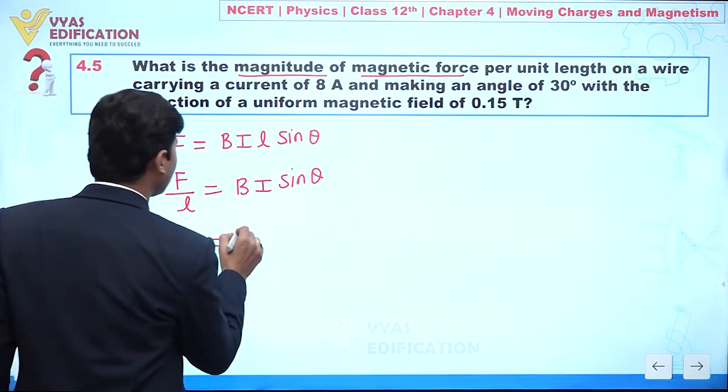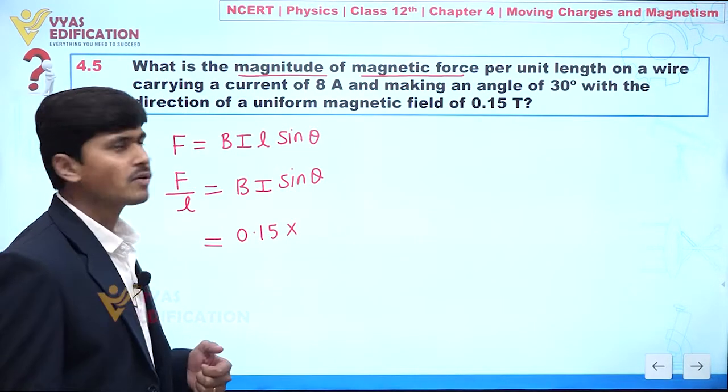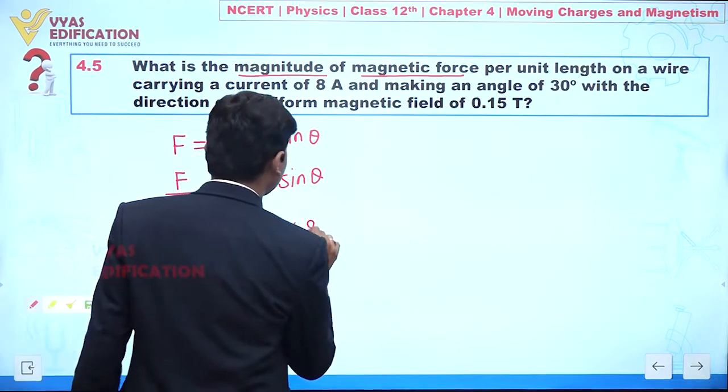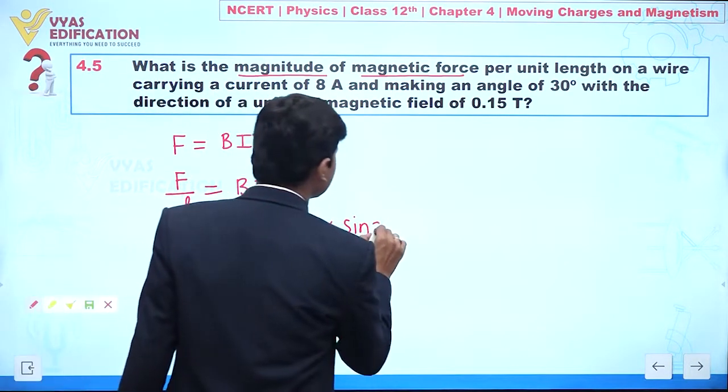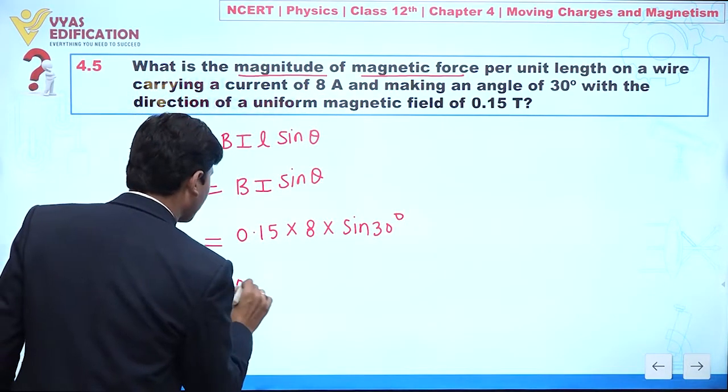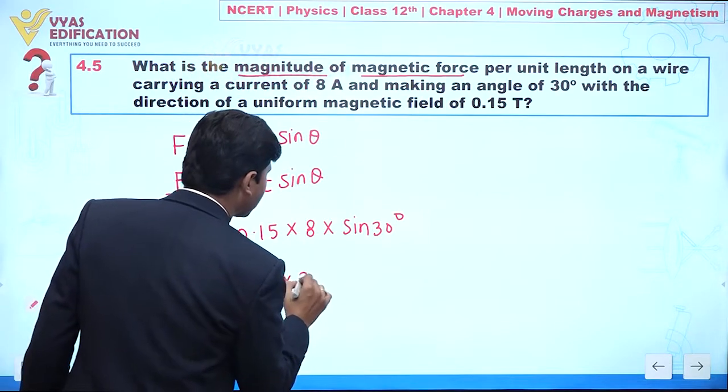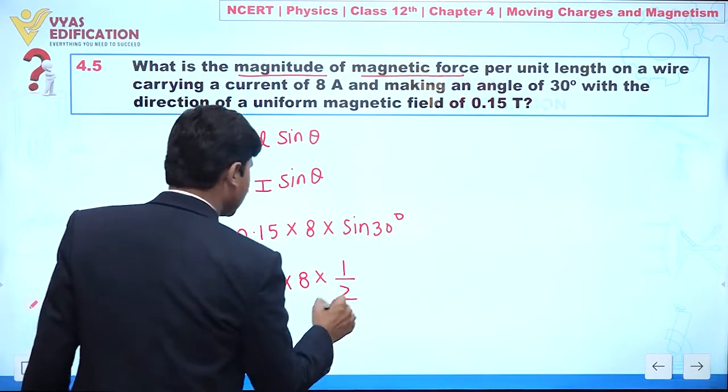Value of B, the magnetic field, we have 0.15. Multiply by current, which is given to you as 8 ampere. And we can say value of sin θ, which is sin 30. So now we can say this is 0.15 multiply 8 into 1 by 2.